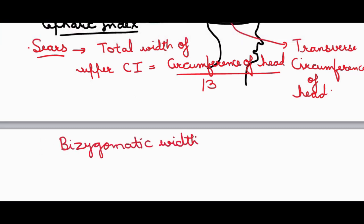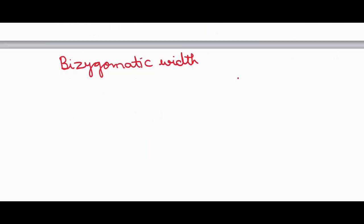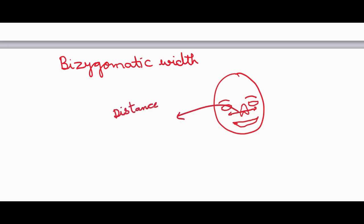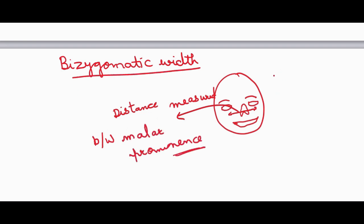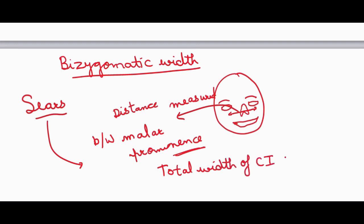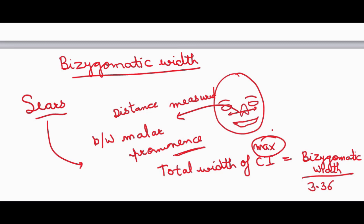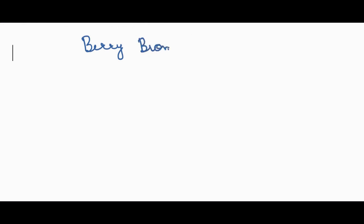Another measurement is the bizygomatic width, defined as the distance measured between the malar prominence on either side. The width of the upper anterior teeth can be calculated by the formula: bizygomatic width divided by 3.36. The width of mandibular anterior teeth is four-fifths of the upper anterior teeth.